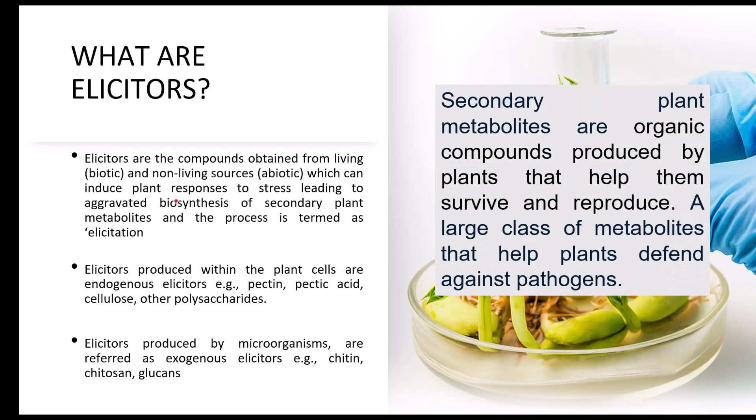Secondary plant metabolites are organic compounds produced by plants that help them survive and reproduce. They are a class of metabolites that help plants defend against pathogens, providing immunity or helping generate an immune response against certain pathogens or chemical compounds.